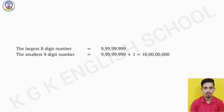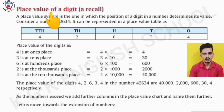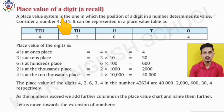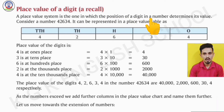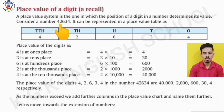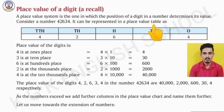After the numbers and number names, we come to the place value of a digit. A place value system is one in which the position of a digit in a number determines its value. Consider a number 42,634; it can be represented in a place value table.